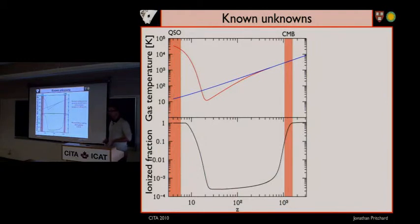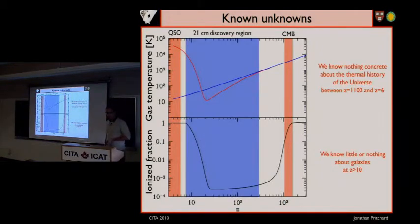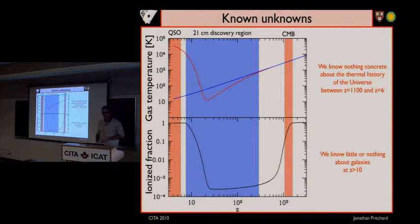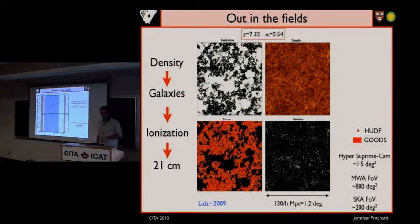We know very little that's concrete about this period, because we know very little about the properties of galaxies at redshifts greater than six. One of the hopes is that observations of the 21-centimeter line can begin to fill in this region of ignorance, from the point when the gas first firmly decoupled from the CMB through to when the universe became fully ionized.